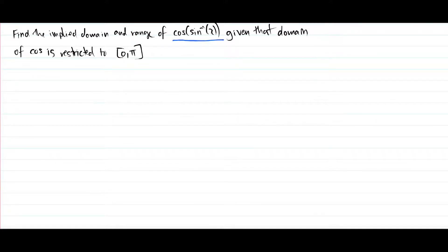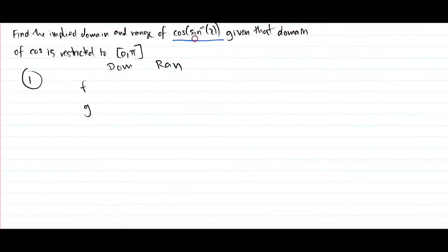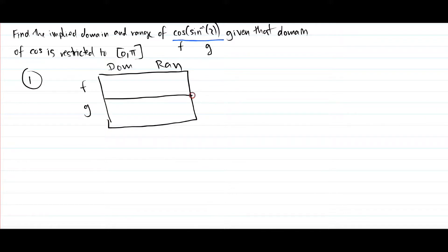With composite functions, whenever you see one, you always have to draw this table, which I refer to as the composite table. That means you have your f and your g — your two functions — then you've got your domain and your range. In this example, f is the cos function, the function on the outside, and g is the function on the inside. So f would be cos x and g would be sin⁻¹x.